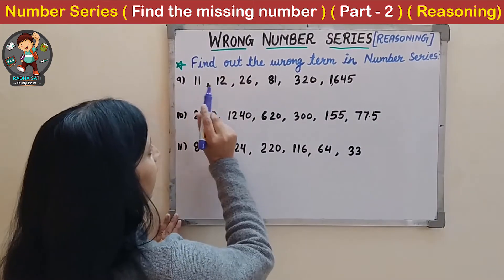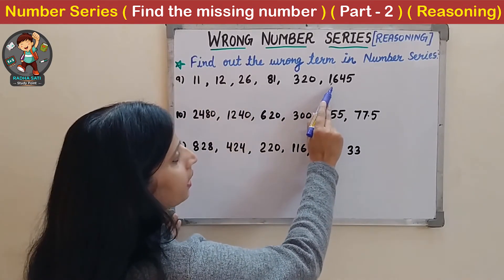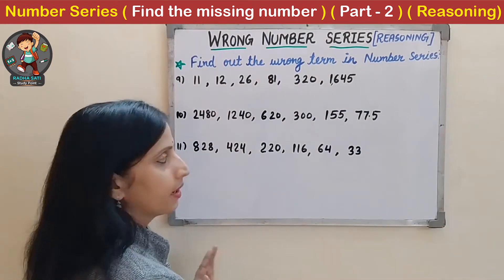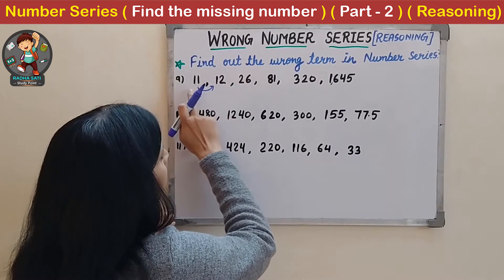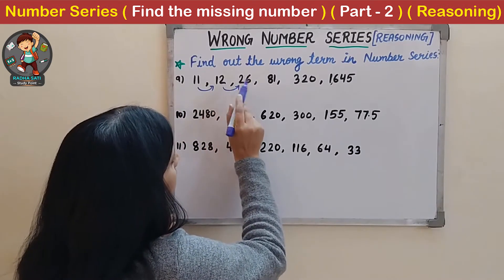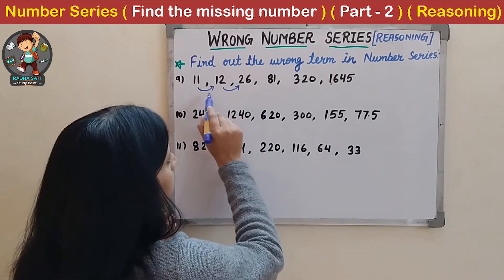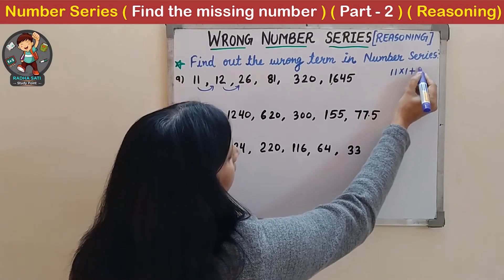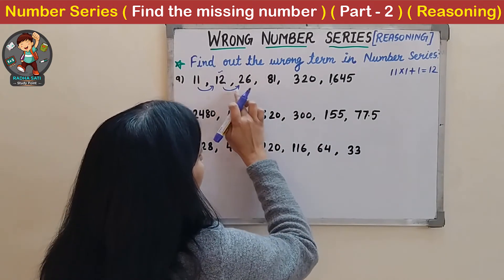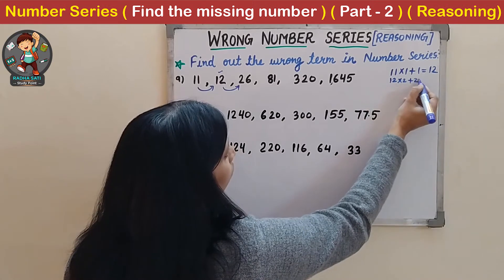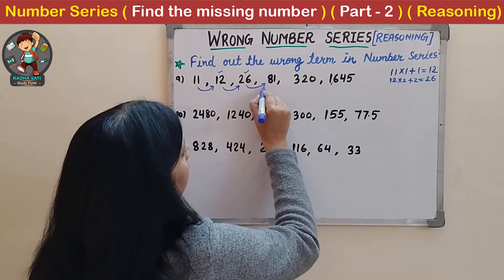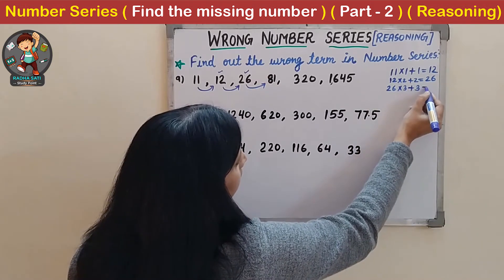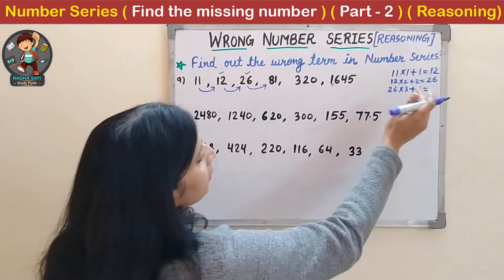Now the next question is 11, 12, 26, 81, 320 and 1645. To find the wrong term, first check the pattern. The second number is 1 more than the first, and the third number is 2 more than twice the second. So 11 × 1 + 1 = 12, then 12 × 2 + 2 = 26, then 26 × 3 + 3 = 81.